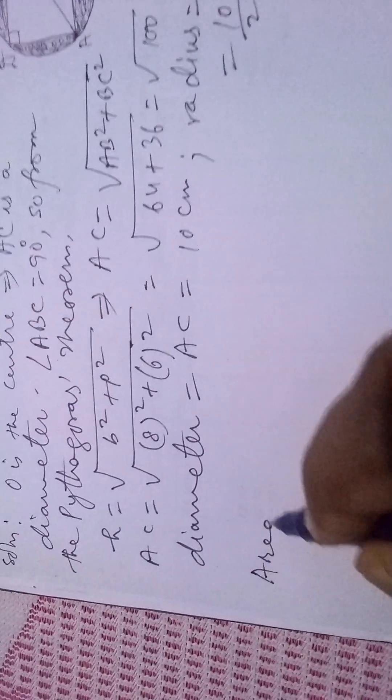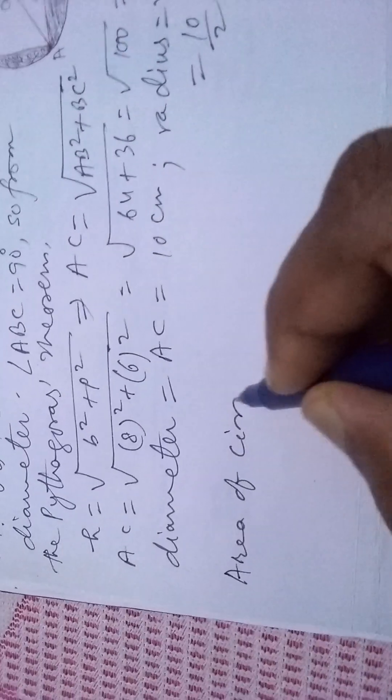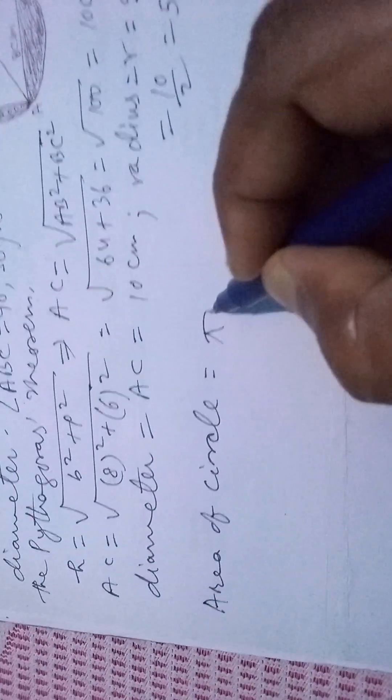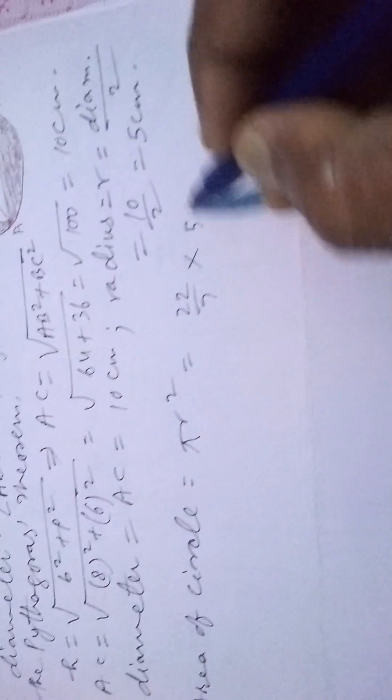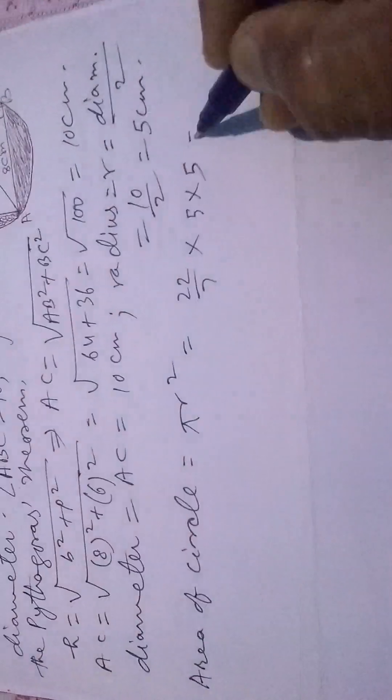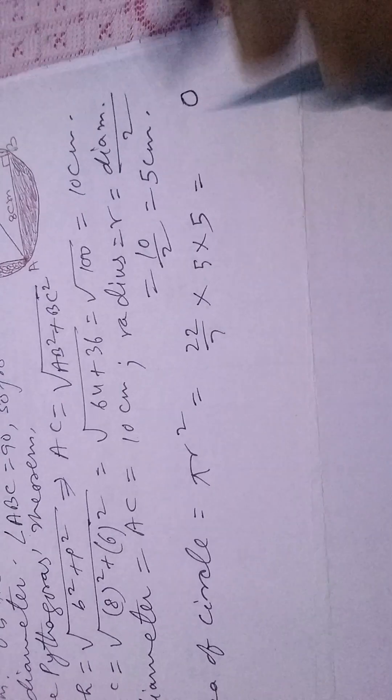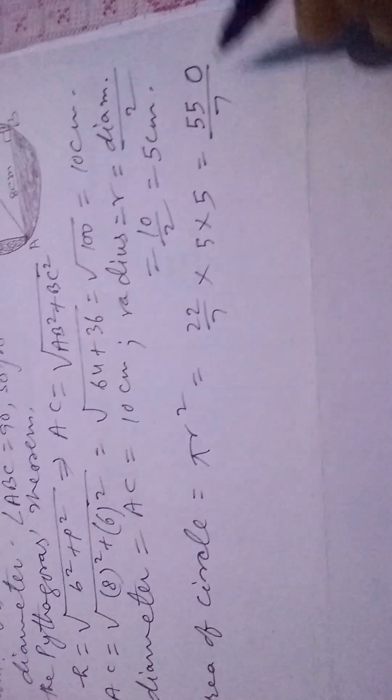First of all, area of circle equals pi r squared, that is 22 by 7 into 5 into 5, and that equals 550 by 7 cm squared.